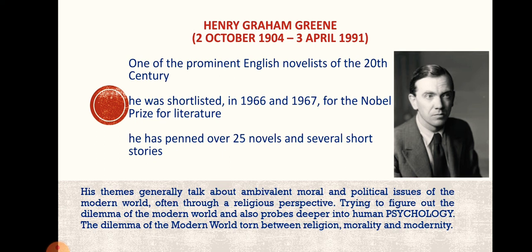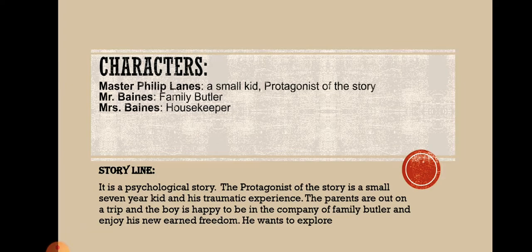This story deals with a child's psychology and the dilemma of the modern world torn between religion, morality, and modernity. The three major characters are: Master Philip Lanes, a small kid and the protagonist; Mr. Baines, the family butler; and Mrs. Baines, the housekeeper and wife of Mr. Baines.